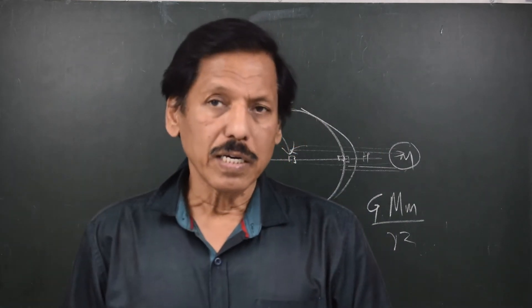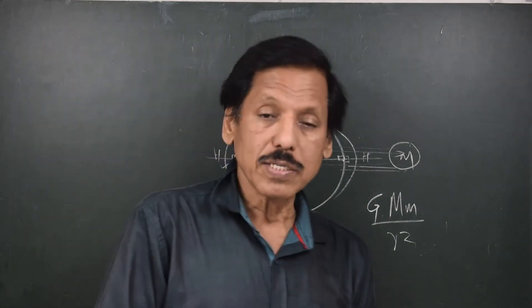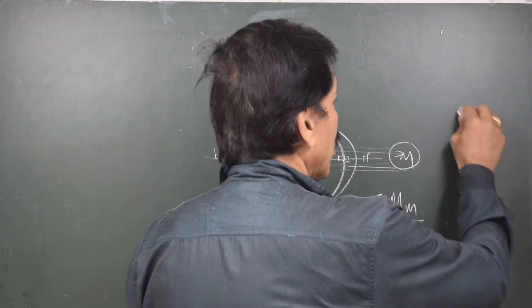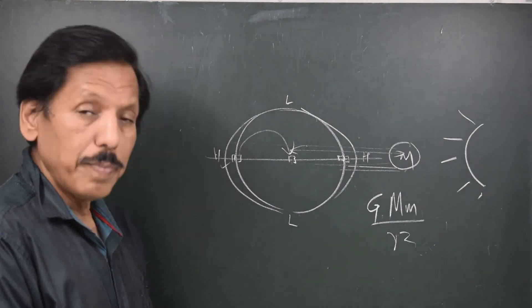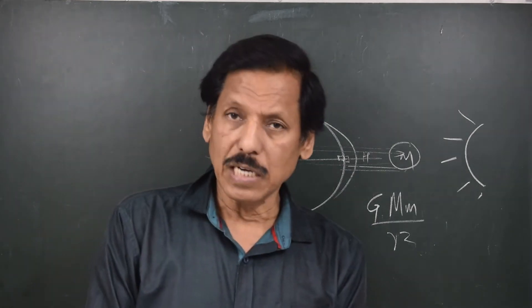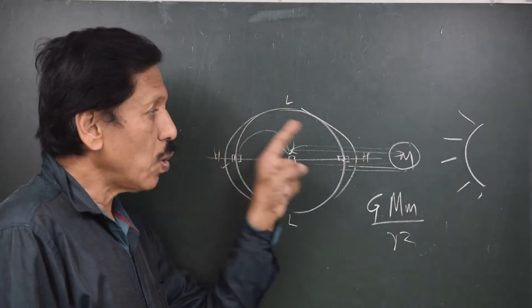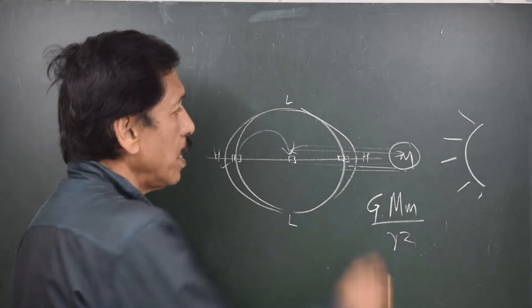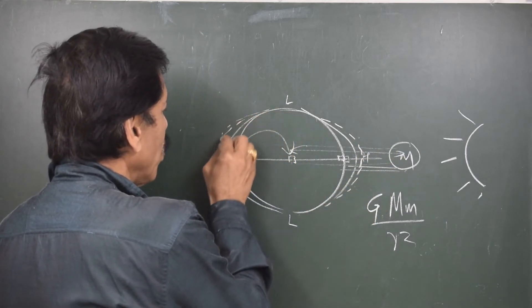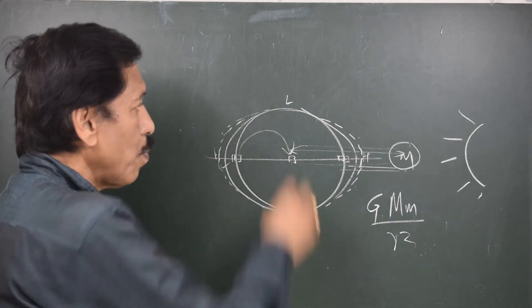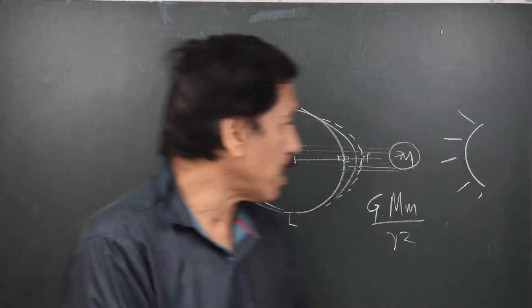Let us understand a few other things associated with the tide. One of the most interesting things is what are spring tides and neap tides. When the sun and moon are both in line — whether the moon is in conjunction or opposition — the pile up exists on the sub-lunar point as well as on the opposite side. Both high waters add up and both low waters compress the water level. This results in extraordinarily strong tides, and these are called spring tides.